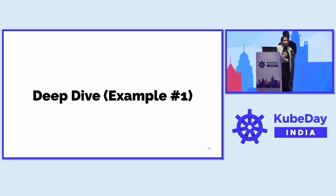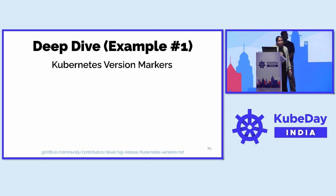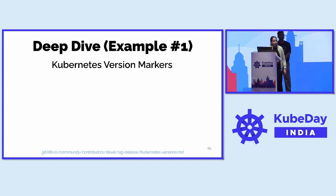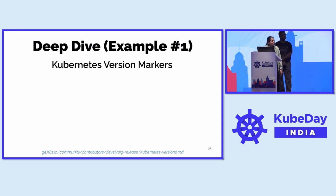Before we get to that, I want to introduce a prerequisite topic: Kubernetes version markers. Every single day we receive hundreds of PRs from contributors around the world. Every time we receive a new change, we have scripts that check out all the code from kubernetes/kubernetes with all these changes and build artifacts — meaning Kubernetes binaries — out of them, to test whether those new changes are not breaking anything.